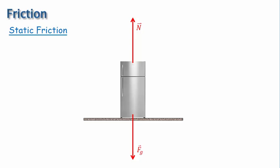Now let's say someone pushes horizontally on the refrigerator. The static friction force will act in the opposite direction with the same magnitude. This keeps the component of the net force that is parallel to the contact surface — that is to say, parallel to the floor — zero. And that keeps the refrigerator from sliding. The static friction force is typically written with a lowercase f and an s subscript. Now let's say the person pushes harder, so the pushing force gets larger in magnitude. The static friction force will then increase, so that it keeps the parallel component of the net force zero.